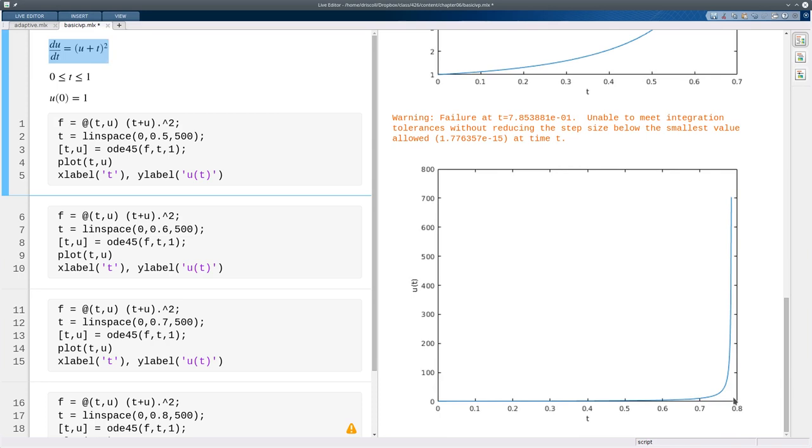So it doesn't matter which solver we used, we would get a similar result where it says the solution may not exist past this time. So the existence of solutions to initial value problems is not something you can take for granted. Not every time when something goes wrong does it indicate that you did something wrong. It might just be a feature of the problem.